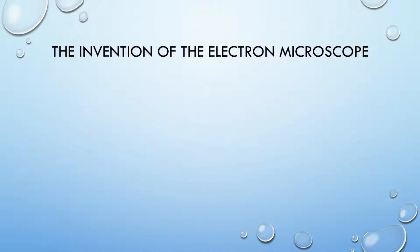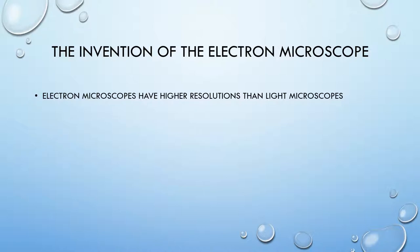Before we dive in, I'm going to quickly go over the invention of the electron microscope. Electron microscopes have higher resolutions than light microscopes. This basically means that electron microscopes can produce images that are more zoomed in than light microscopes.